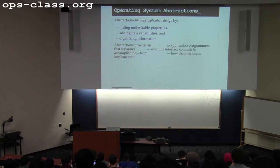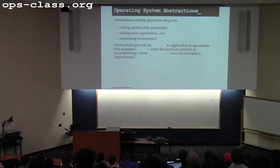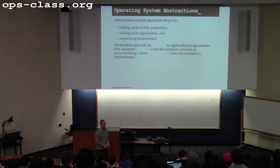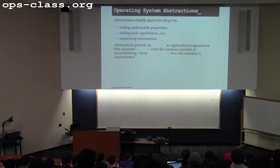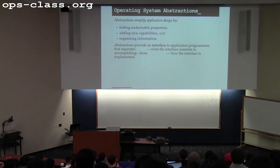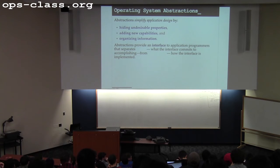So, can anyone complete the puzzle here? The operating system provides abstractions — what do applications interact with? An interface, right? Abstractions provide an interface. To some degree, abstractions are encapsulated by an interface — that's what defines them. The interface is what an abstraction provides.